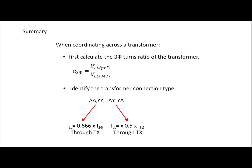In summary, when coordinating across the transformer, first calculate the three-phase turns ratio a_3φ, then identify the transformer connection type. If it's Delta-Delta or YY, the factor used to calculate the line-to-line current is 0.866 times the three-phase current. If the transformer is Delta-Y or Y-Delta, use a factor of 0.5 times the three-phase current to calculate the line-to-line current when going through the transformer.